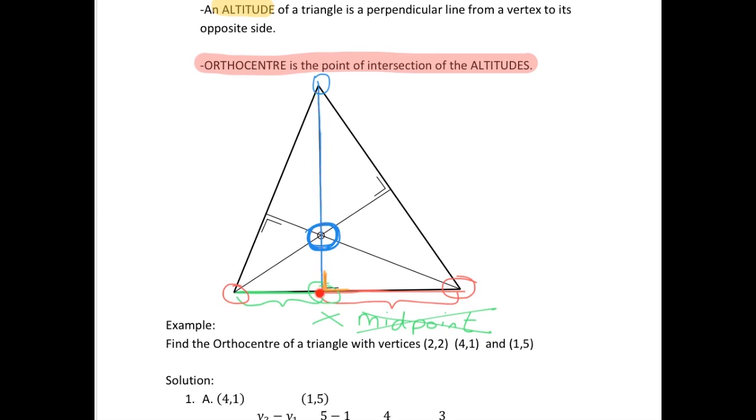Then we have our slope, we have our point, we can find the equation of the line. Do this again for this line here and we'll be able to find two equations. Using simultaneous equations we can find their point of intersection.